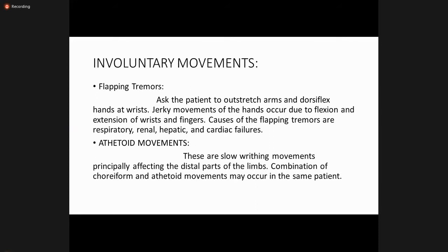Flapping tremors: ask the patient to oustretch the arms and dorsiflex the hands at the wrist. Jerky movements of the hand occur due to flexion and extension of the wrist and fingers. Causes of flapping tremors include respiratory, renal, hepatic, and cardiac failure. These are most commonly checked in liver failure.